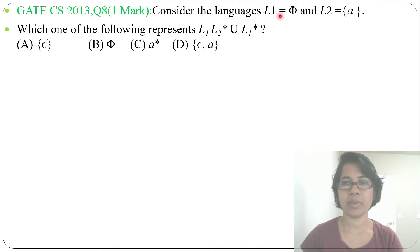Let's read the question. Consider the language L1 equal to Phi, it's empty language, L2 equal to A. Which one of the following represents L1, L2 closure, union, L1 closure?